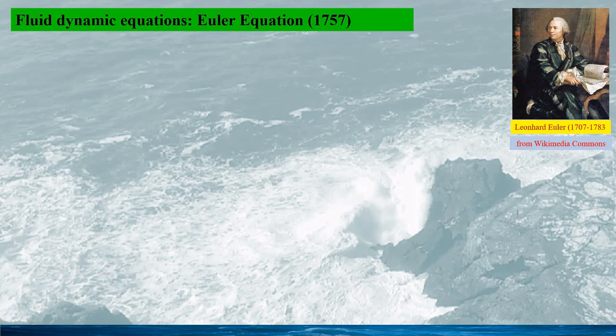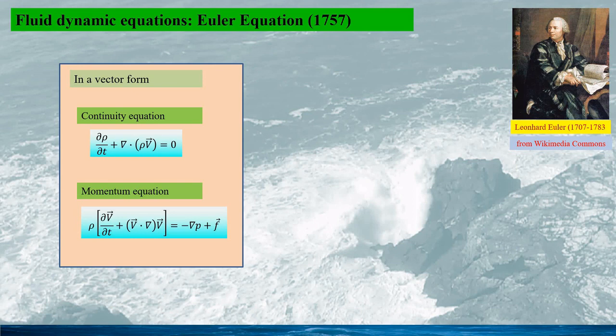To study turbulent flow, we must first have the mathematical equations for describing the dynamics and motions of fluids. Leonhard Euler, the Swiss mathematician and physicist, was the first scholar who unified the mechanics of fluids to a single framework by deriving the fluid dynamics equation, which now bears his name as the Euler equation, and laid the foundation for establishing the full fluid dynamics equation.